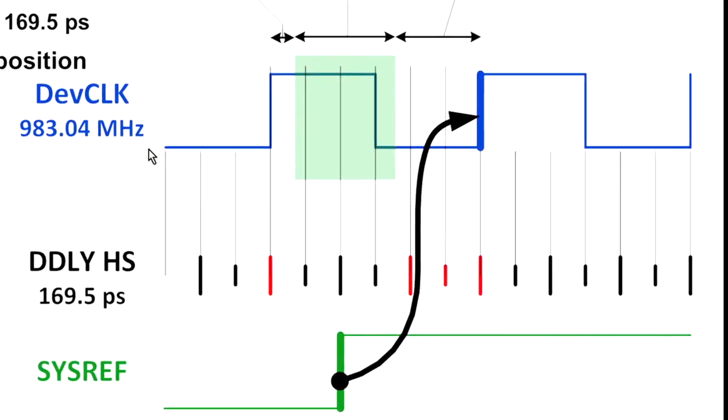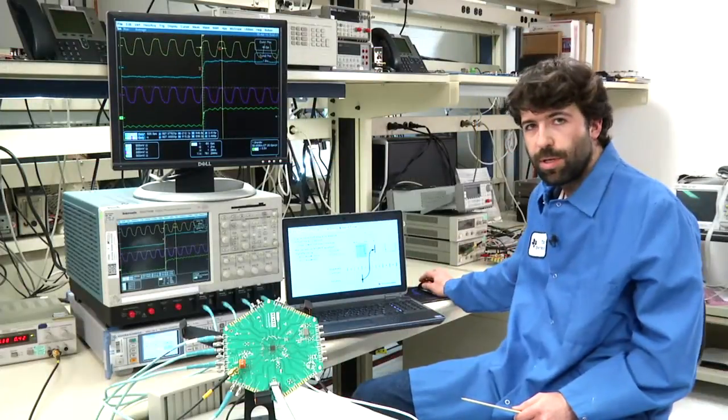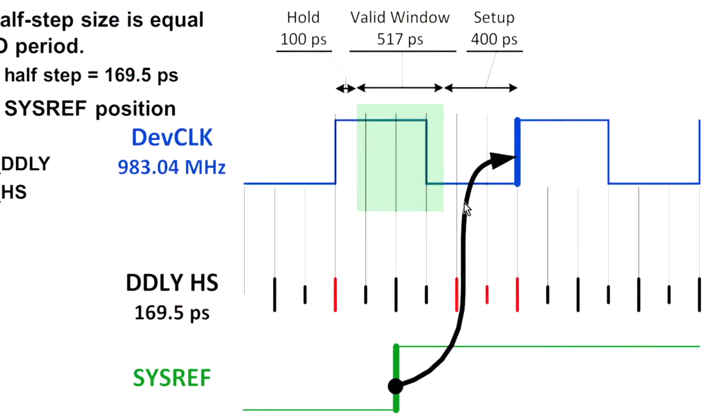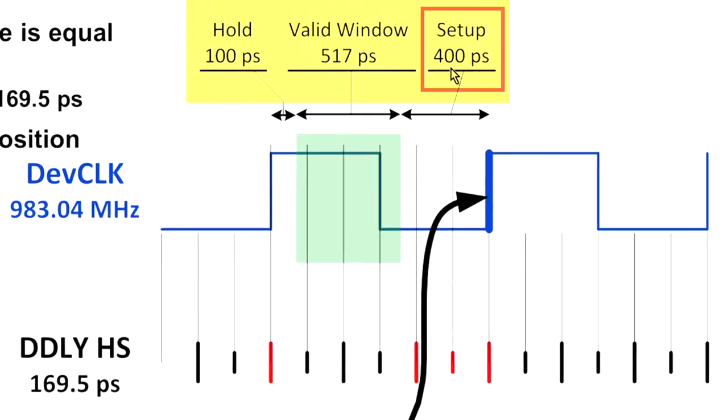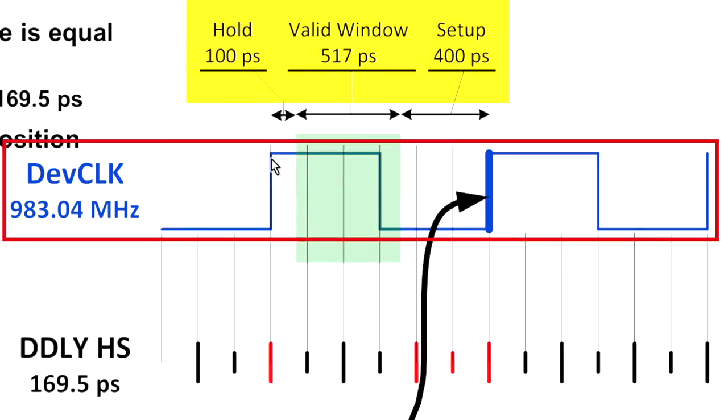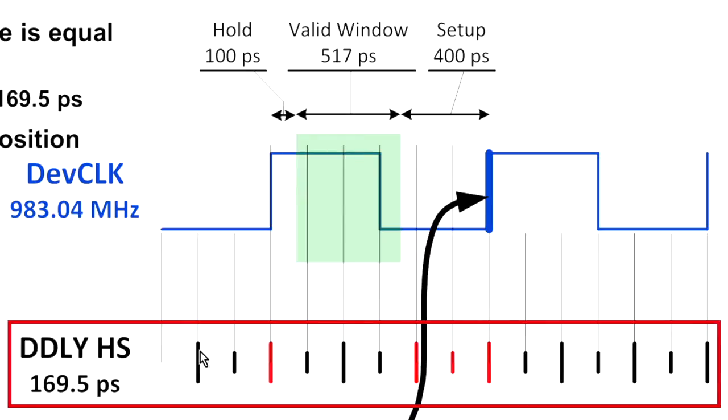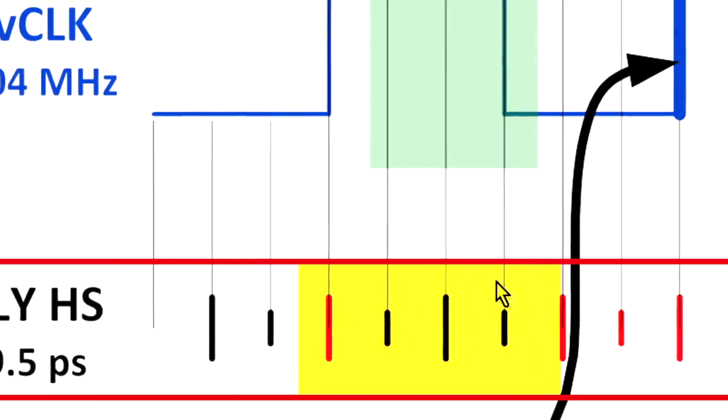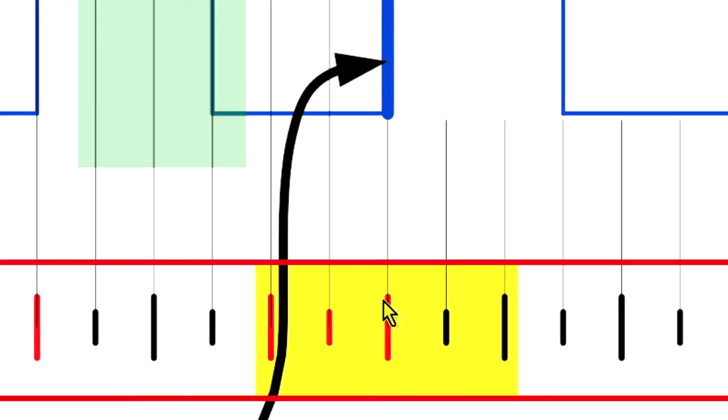Here I show a slide with a device clock of 983 megahertz. Your converter is going to have specifications for the requirements for setup and hold time that the sysref must meet to provide a valid sysref clock to the device. Let's suppose our device has a setup time requirement of 400 picoseconds and a hold time requirement of 100 picoseconds. In the case of this 983 megahertz device clock, which has a period of a little over 1,000 picoseconds, that leaves me with a valid window of about 517 picoseconds. My digital delay on this device is able to adjust in a half period of the VCO frequency. In this case, I have about a 2.9 gigahertz VCO frequency. This 2.9 gigahertz allows a full VCO cycle step of around 340 picoseconds. It also allows for me to step in a half period, which is about 170 picoseconds.